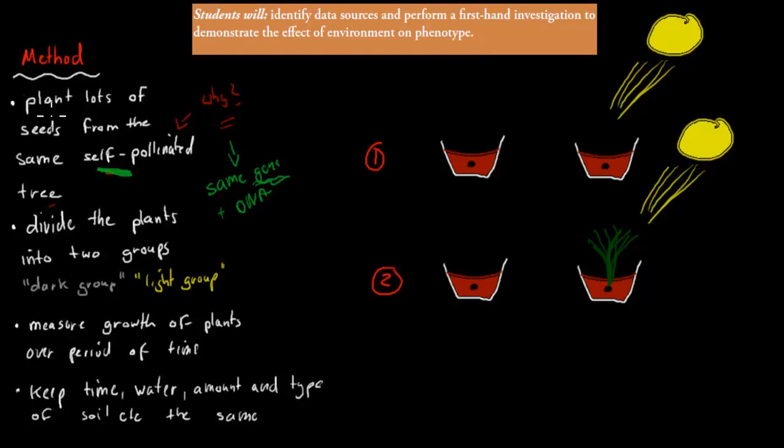We grab these seeds and plant them, and we make sure we plant lots of them, not just one tree but lots of trees. And why is that? To increase our reliability. The more tests we do, the more reliable the actual results are.